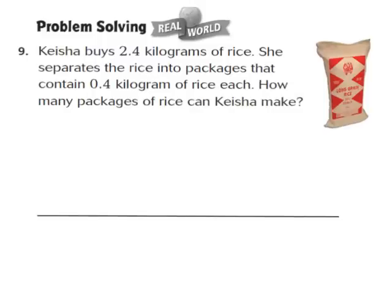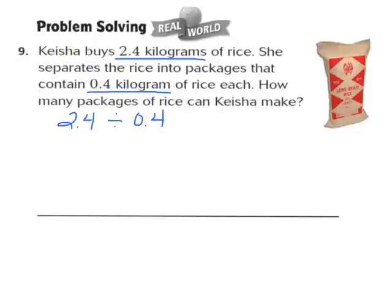Let's take a look at question number 9 — one of our real-world problem-solving questions. We know that she buys 2 and 4 tenths kilograms of rice, and she separates the rice into packages that each contain 4 tenths of a kilogram. So we're going to take our 2 and 4 tenths and divide that by the 4 tenths packages she's making. This is about using our models to do decimal division. Step number 1 says to shade decimal models to represent the dividend — in this case, 2 and 4 tenths.